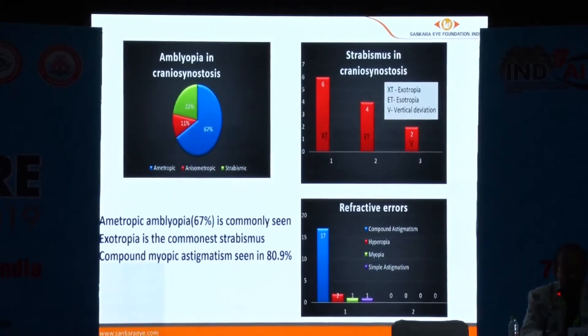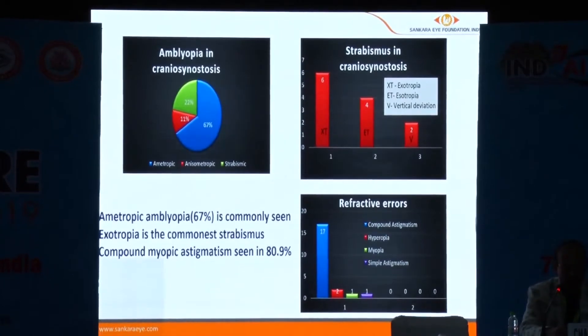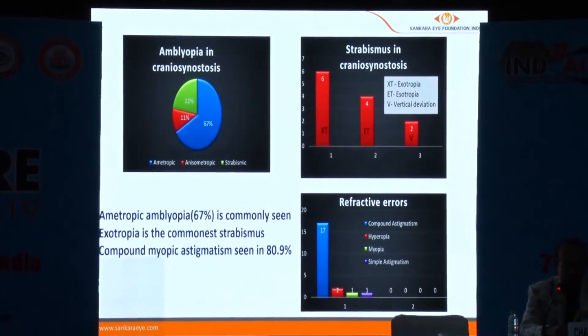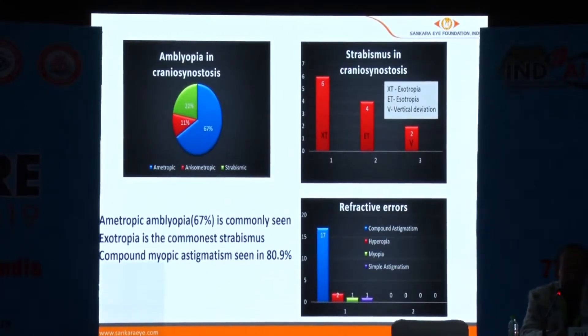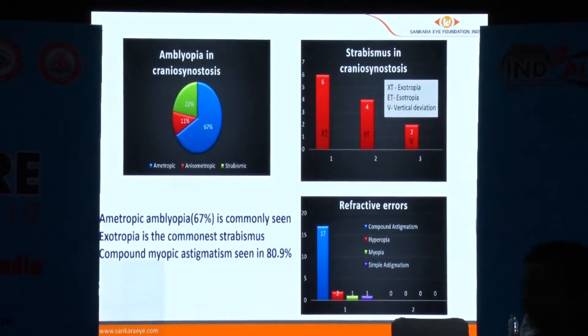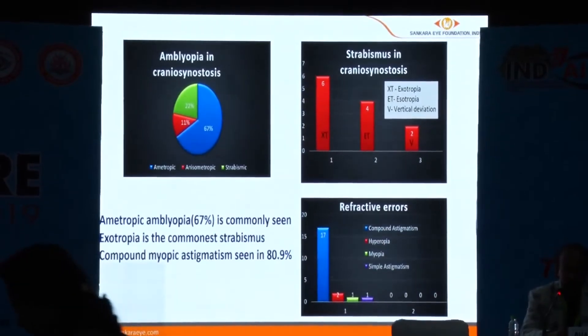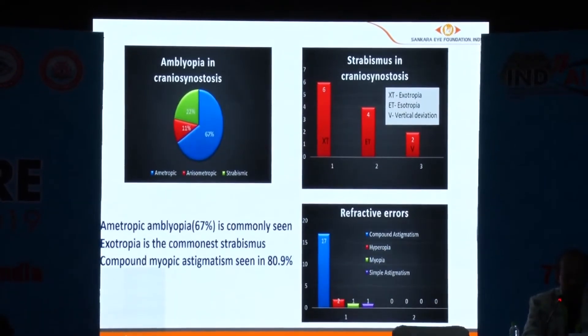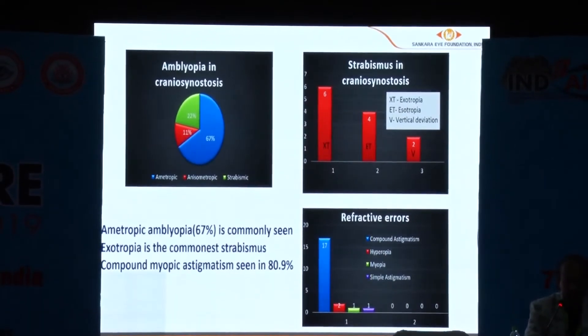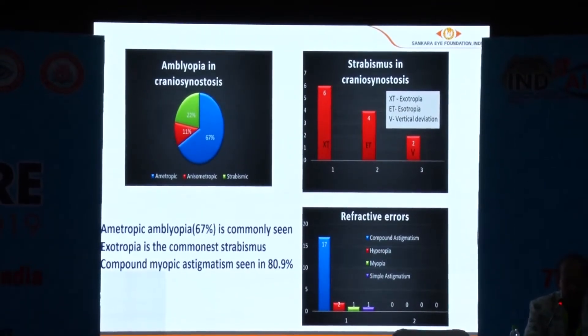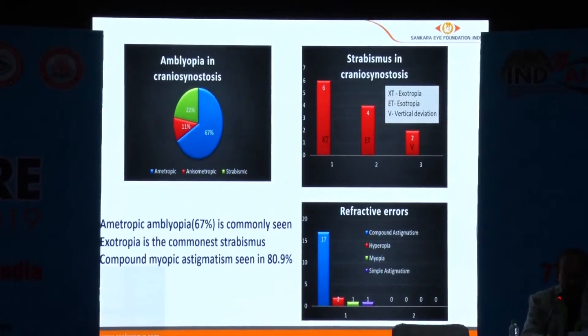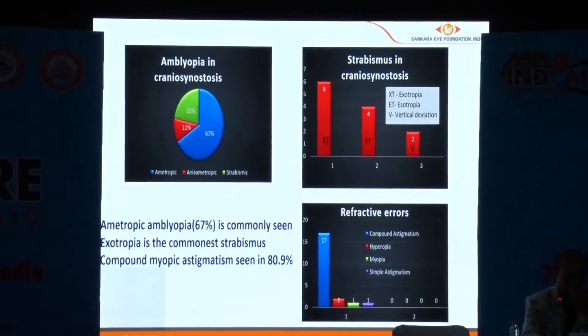The amblyopia in craniosynostosis is most commonly due to ametropic amblyopia. Strabismus commonly presents as exotropia, followed by esotropia and vertical deviation. Compound myopic astigmatism is found to be commonly present in these children.